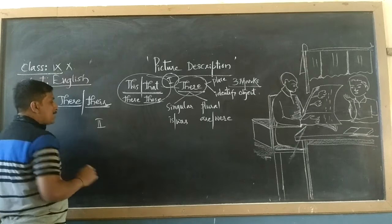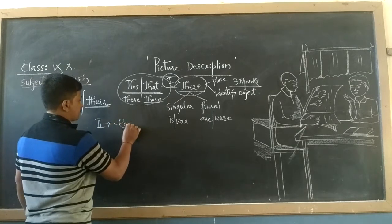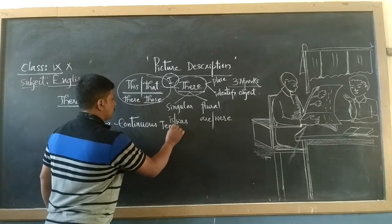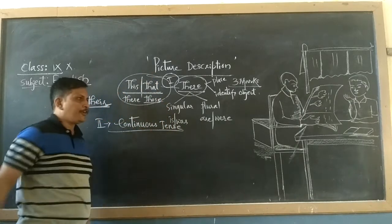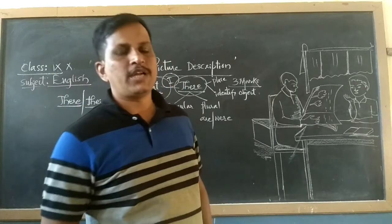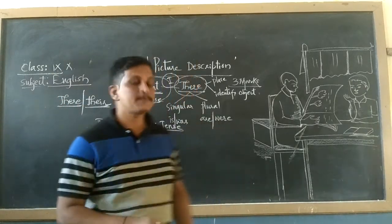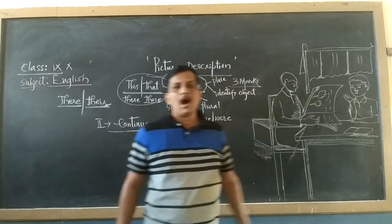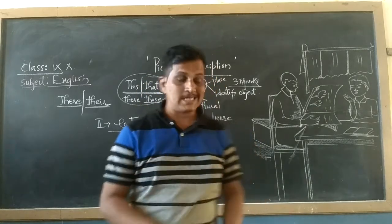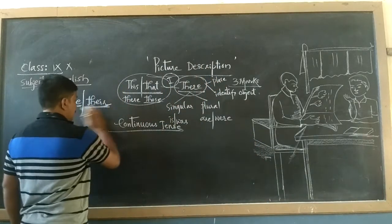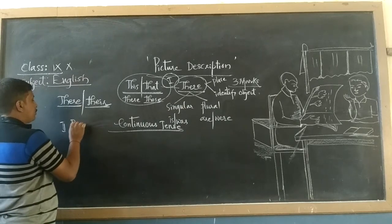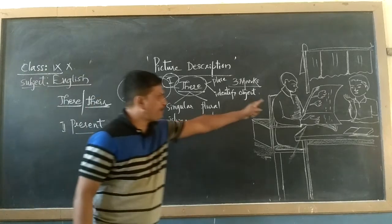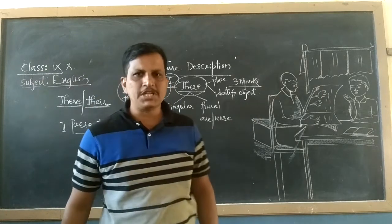Now the second step. Second step is continuous tense — we have to use continuous tense. For helping students, here the continuous tense is used to identify what things are existing in this picture. That is present continuous. The second step is present continuous, which helps us to identify the things existing in that picture.